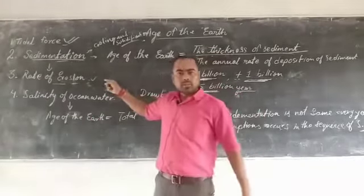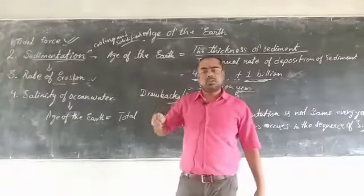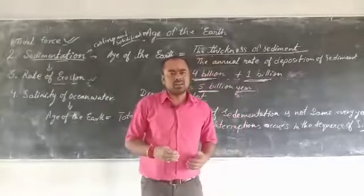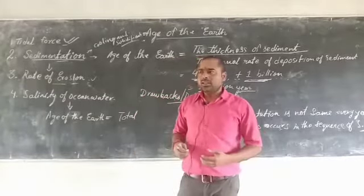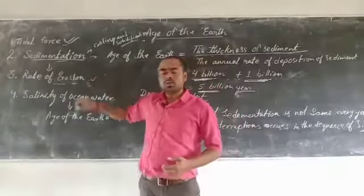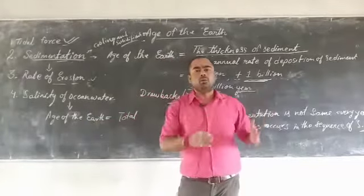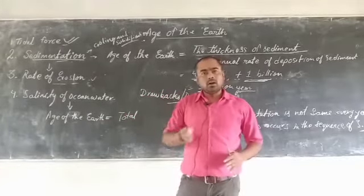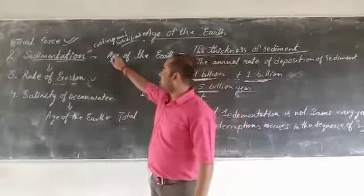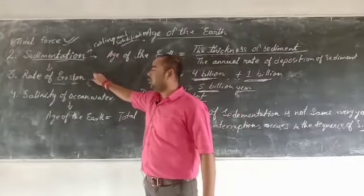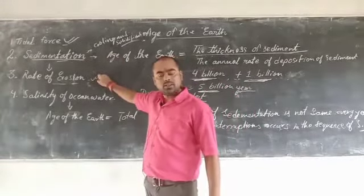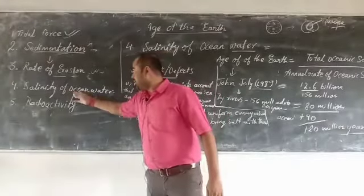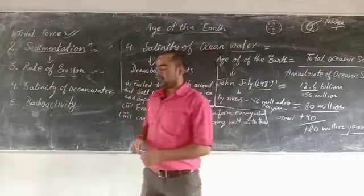The rate of erosion is similar to sedimentation — sedimentation means deposition. Agents of denudation such as rivers and wind also cause erosion. We can take the example of a mountain and calculate how much erosion occurs per year. In the same way as sedimentation, the rate of erosion also helps us find out the age of the earth.